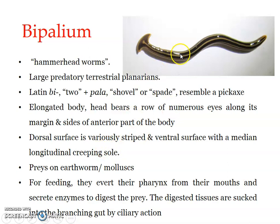As already mentioned, Bipallium feeds upon earthworms and molluscs. During feeding, these Bipallium evert their pharynx from their mouth — they push the pharynx outward — and it secretes digestive enzymes onto the prey. Digestion takes place outside the body, and the digested material is absorbed into the branching alimentary canal by suction. Since the same process occurs in Dugesia, which we will study as a type species, we will cover it in detail there. This concludes the discussion on Turbellaria and Bipallium.